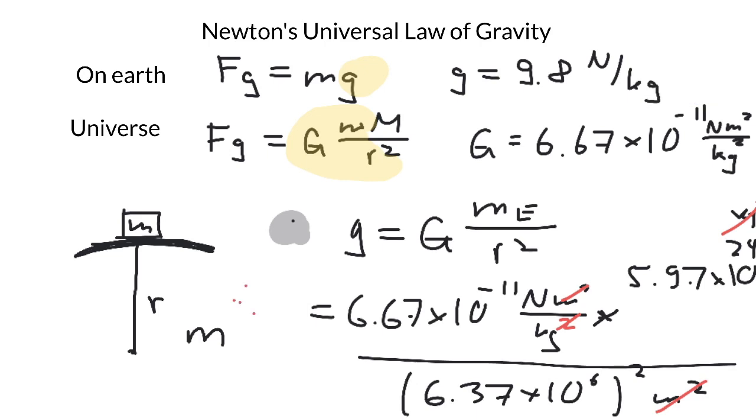And if you plug in the numbers on my calculator, what I get is just give me a second—so what I got is a value of 9.8134 newtons per kilogram, which is exactly proving that if you're on the surface of the planet, the universal law of gravity becomes the law of gravity as we knew it from high school.